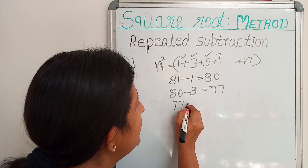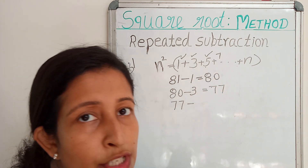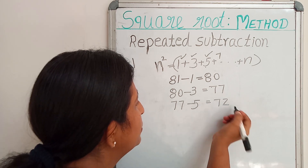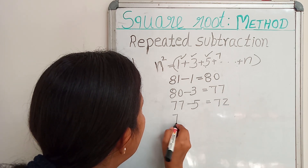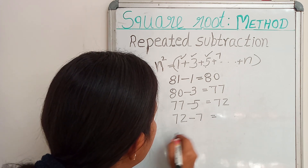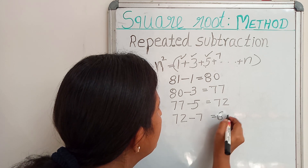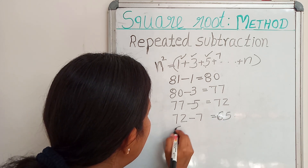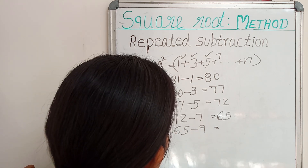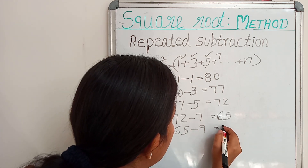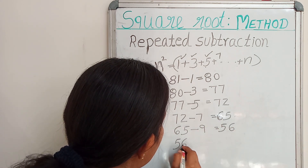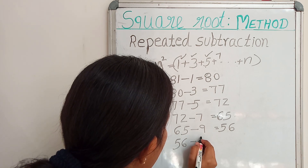Then write down 77: 77 minus the next odd number, 5, then we get 72. Then 72 minus 7, that is equal to 65. Then 65 minus 9, that is equal to 56. Then 56 minus 11.